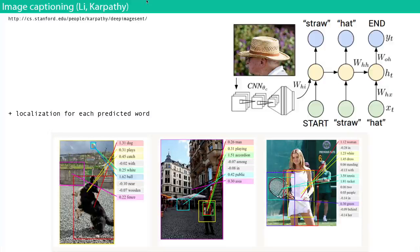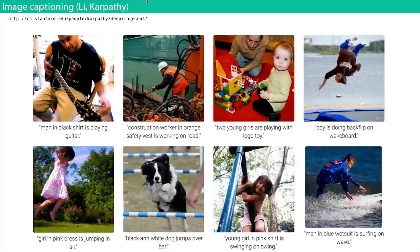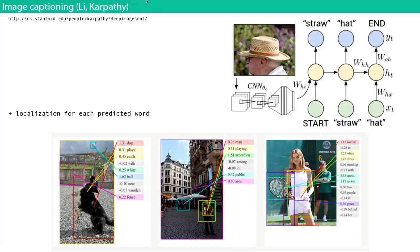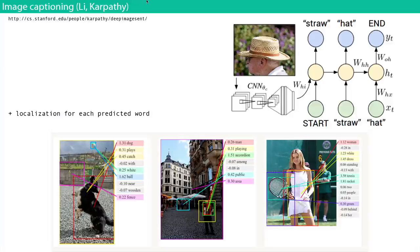You take the activations from a convolutional neural network — the feature vector it produces — and that becomes one of the inputs to the initial hidden state of the recurrent neural network. Then you pass in a start token, and the RNN samples words of text. At some point it gives you a special end token and you stop. This is done on words rather than characters because it has a limited vocabulary.